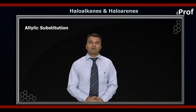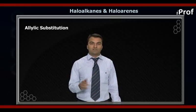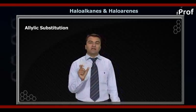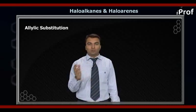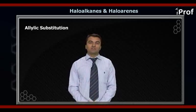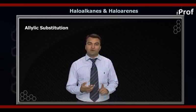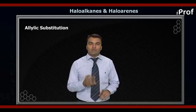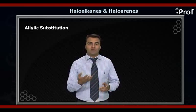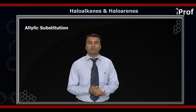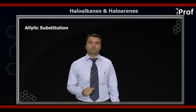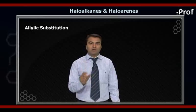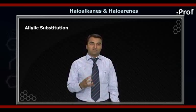Let us see an example. First of all, let me tell you what is the reagent for allylic substitution. Either chloro or bromo can come, meaning we can have allylic substitution for bromine or for chlorine. Suppose you heat an alkene in the presence of Br₂ or Cl₂ at 773 Kelvin, then the product formed will have the halogen at the allylic position, replacing one of the hydrogens.